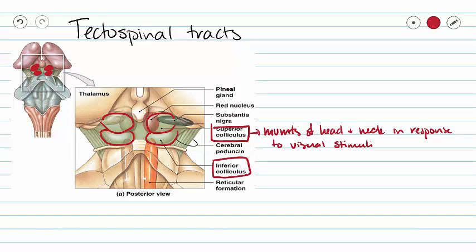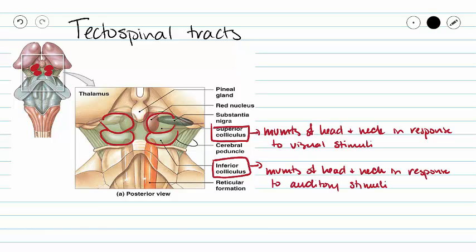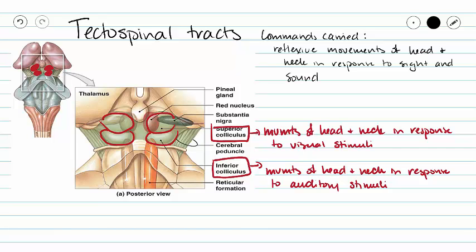Our inferior colliculus is going to control movements of the head and neck in response to auditory stimuli. So with our tectospinal tracts, we are going to control reflexive movements of the head in response to sight and sound. Our ultimate destination is going to be those muscles that control head position, like our trapezius and our sternocleidomastoid. Our tectospinal tracts relate back to our tectum, which is our corpora quadrigemina.